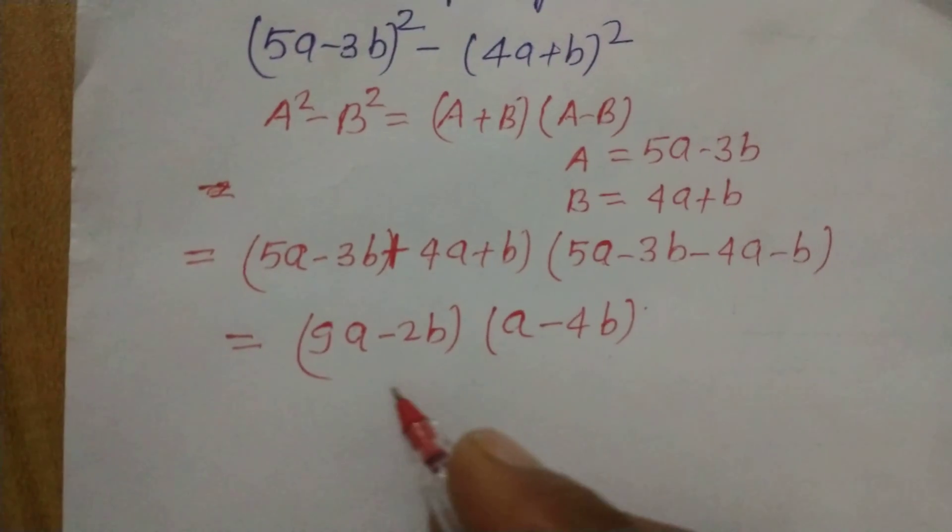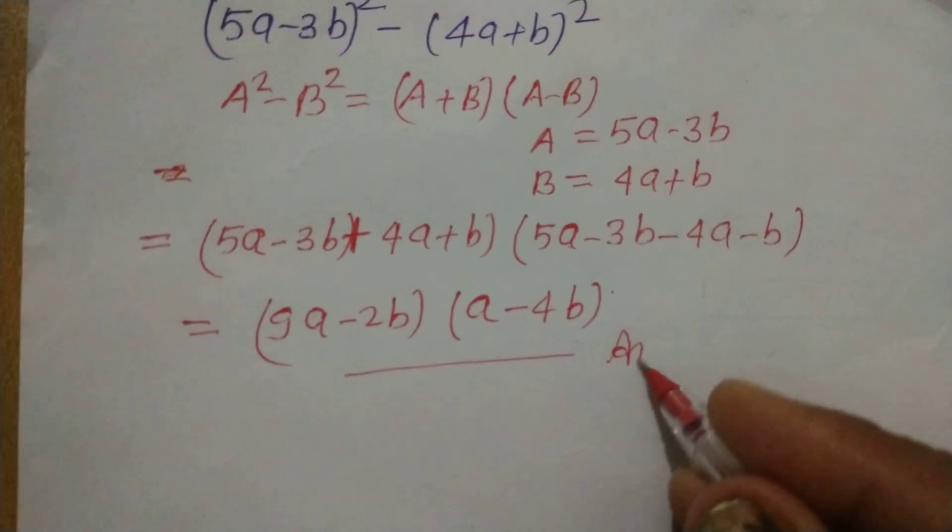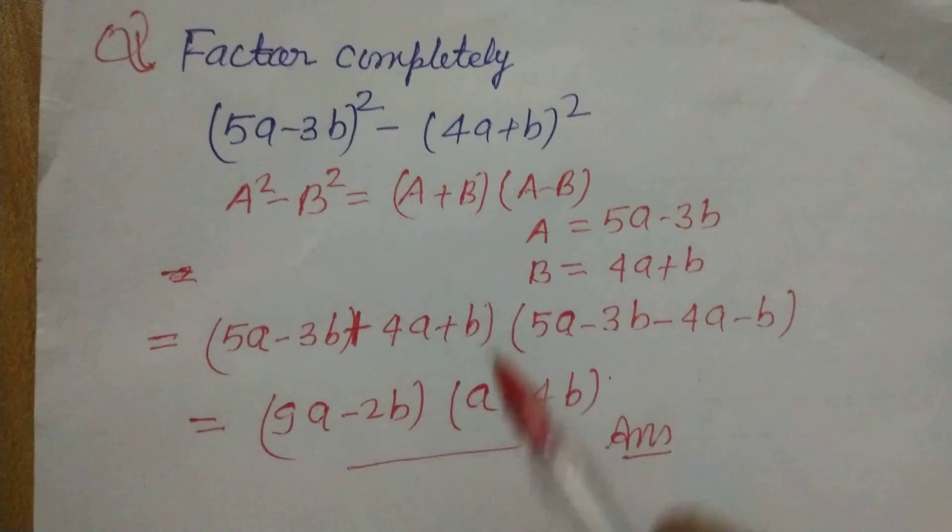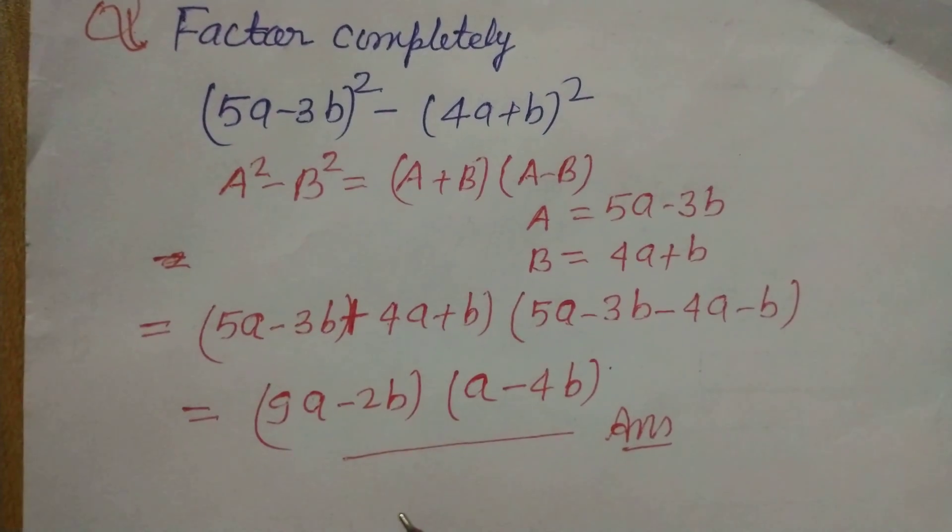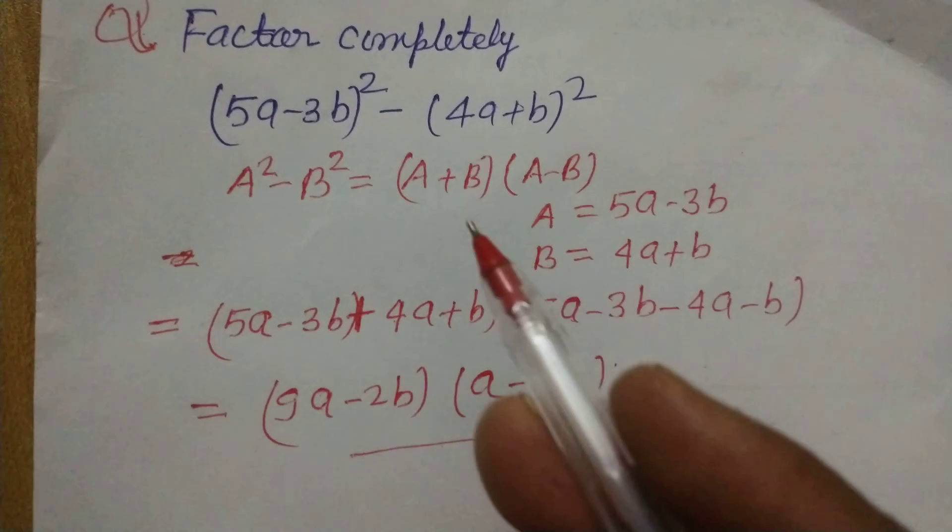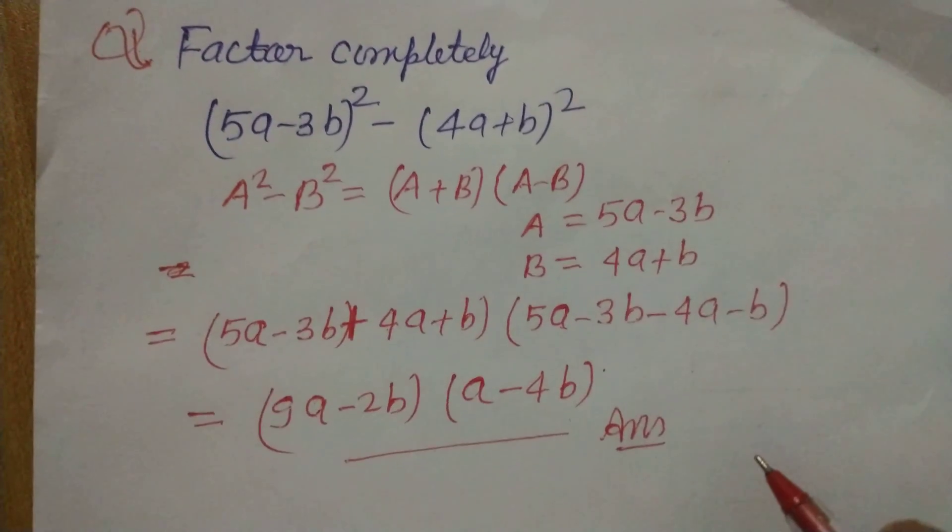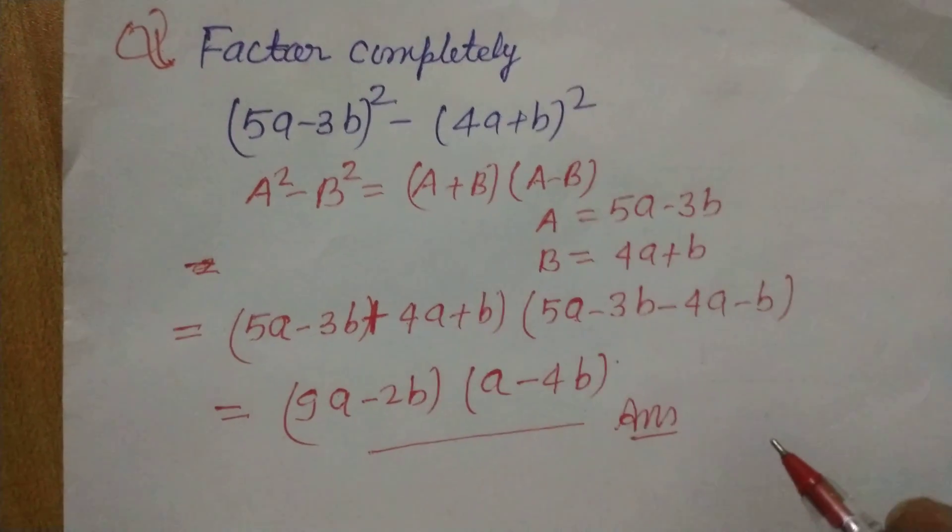So this is the answer, and these are the factors of the difference of two squares. a²-b² is (a+b)(a-b). I hope you got it, please like the video, subscribe the channel, thanks.